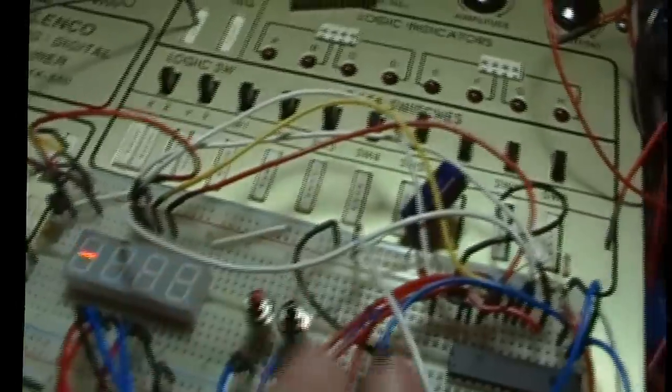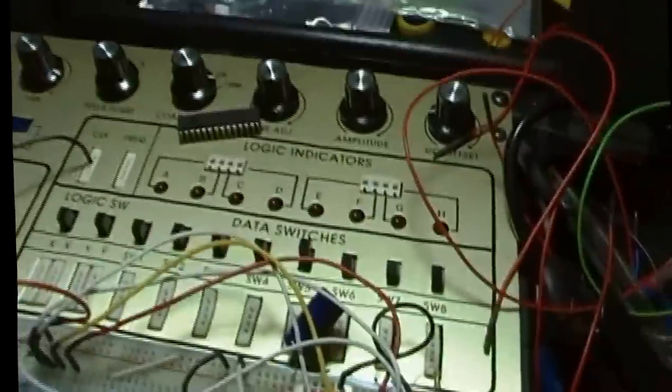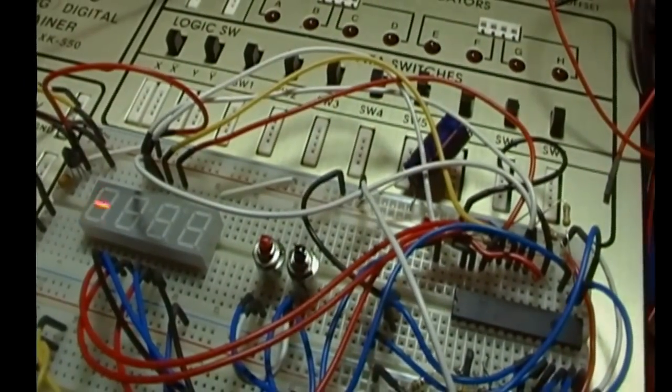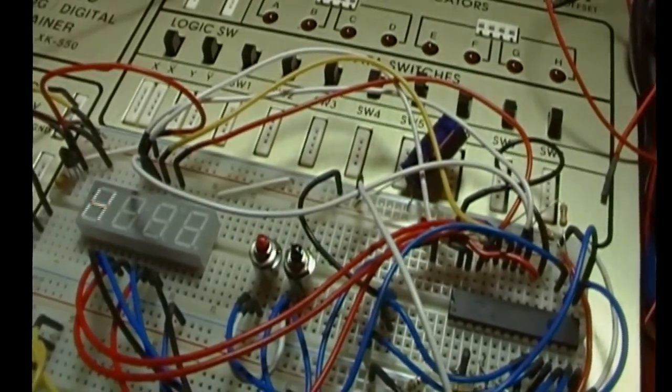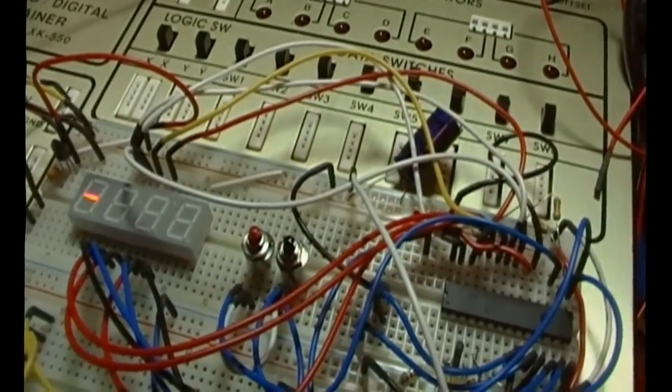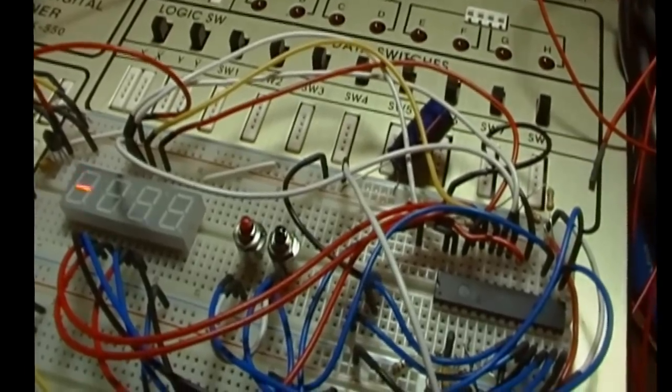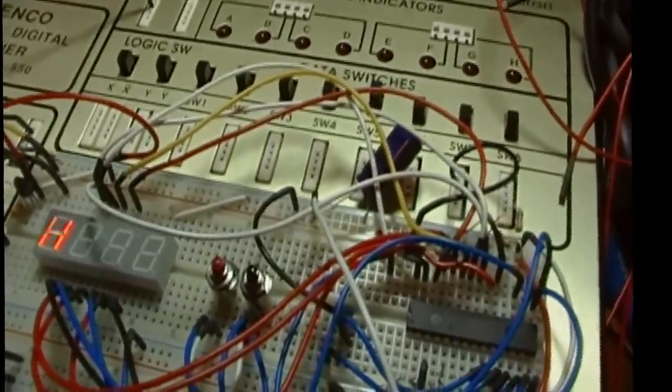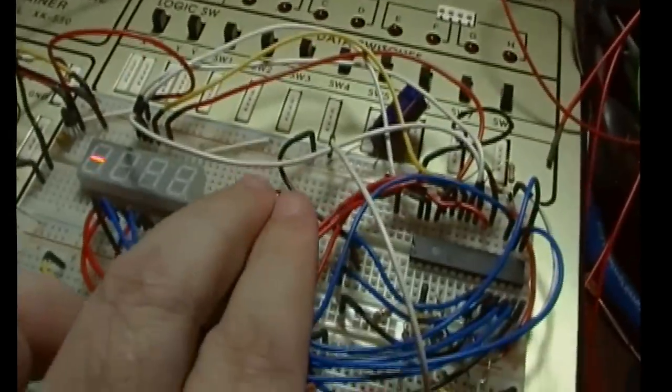And the logic probe circuit shows you if the probe tip is high, low, or floating. Right now it thinks it's floating. Now it thinks it's low. Now it thinks it's high. You might have noticed when it pulses briefly, it shows a P. And it gives you an idea that there was a pulse on the line. So just basically a logic probe.